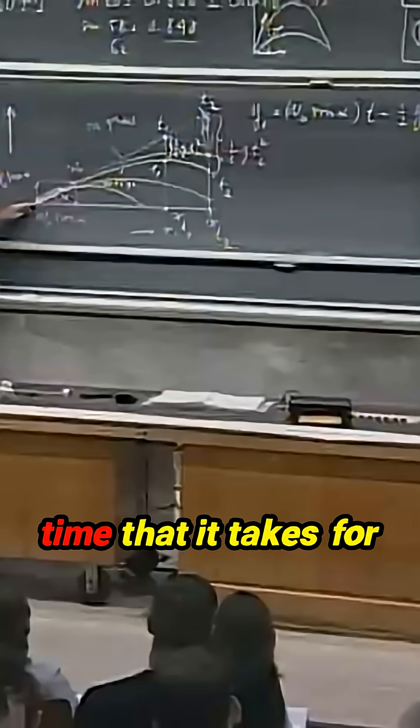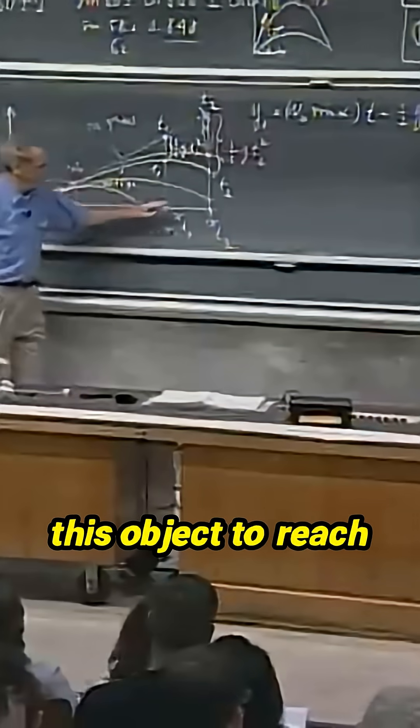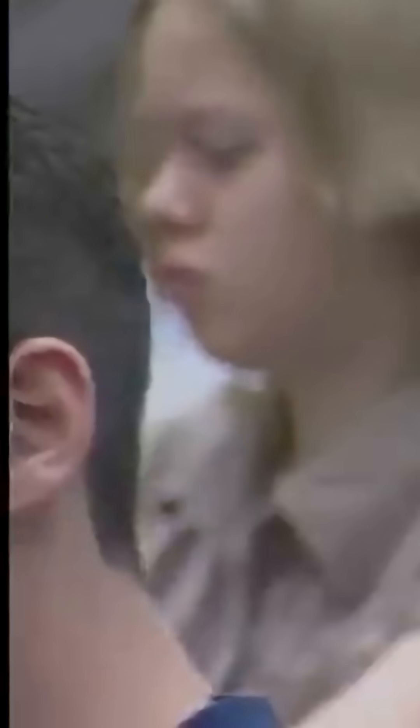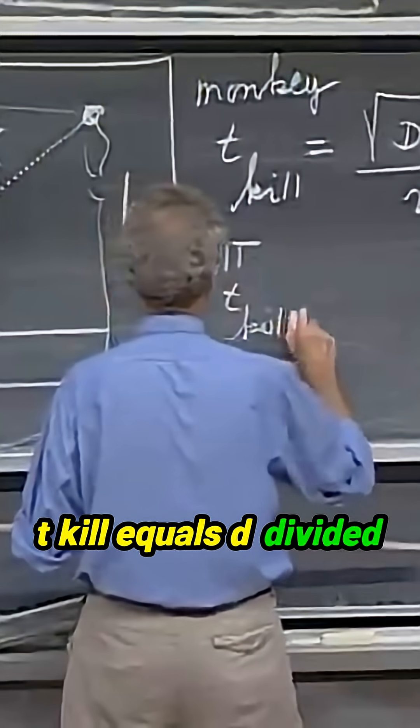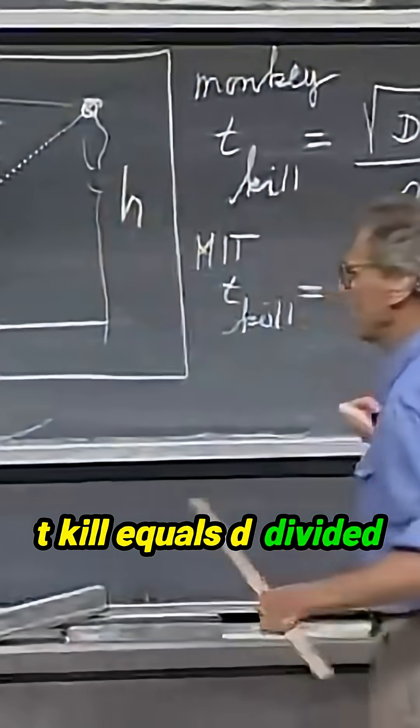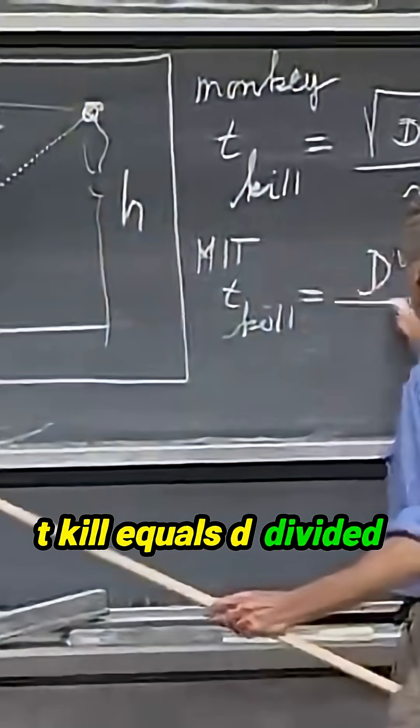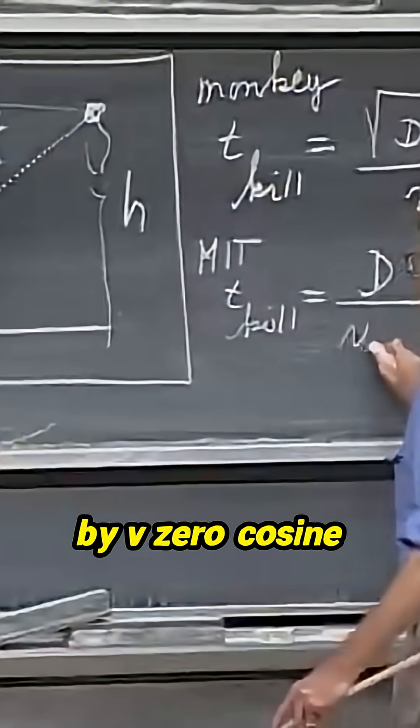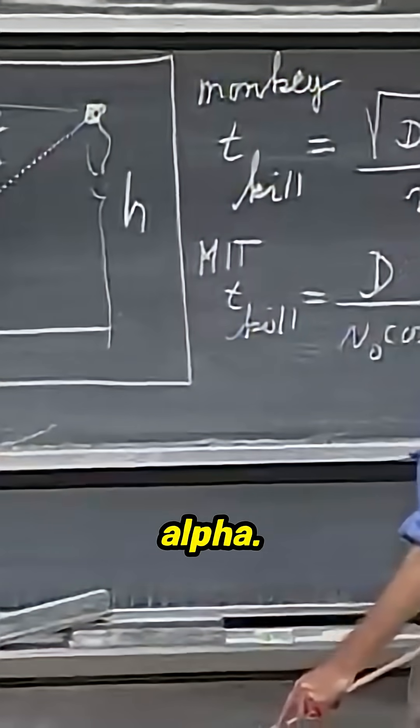In other words, the time that it takes for this object to reach this value of x, so for 26,100 MIT students, t kill equals d divided by v zero cosine alpha.